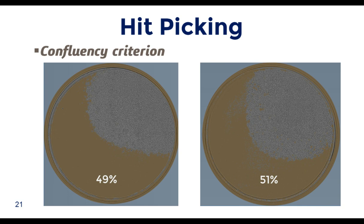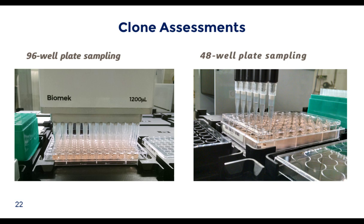A higher confluency criterion means missing some clones with slower growth but perhaps high specific productivity, while selected clones should have better growth. Selecting clones at lower confluency yields more clones but includes slower growers. Workflows are defined on best-case or typical scenarios and continue to be evaluated — scaling up at 20% confluency could cause lagging at the next step due to excessive split ratio, while waiting for 80% may result in loss of viability. A liquid handling platform makes sampling at later, more predictive stages no more inconvenient than sampling at the 96-well step.